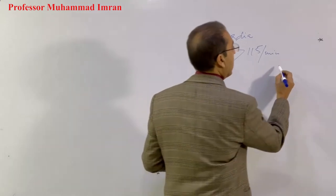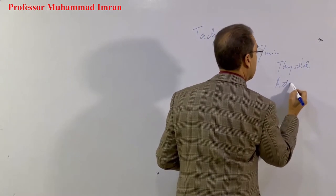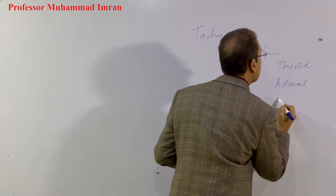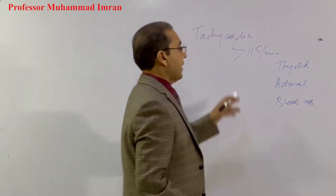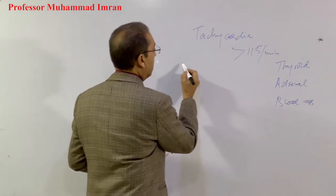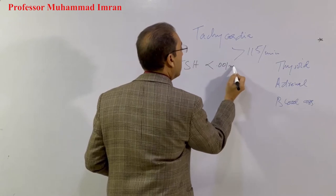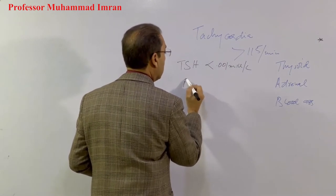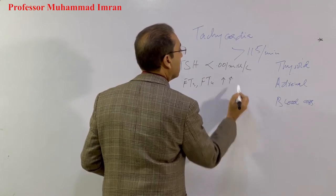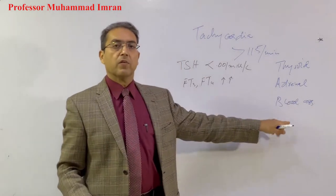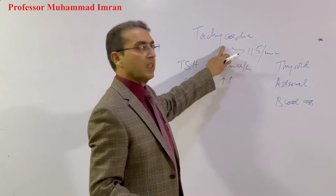I requested his thyroid profile, adrenal assessment, and blood sugar assessment. The next day he reported: his TSH was well below 0.001 milli-international units per litre, while FT3 and FT4 were quite elevated. The adrenal profile and haemoglobin A1c were normal. So this patient was suffering from hyperthyroidism.